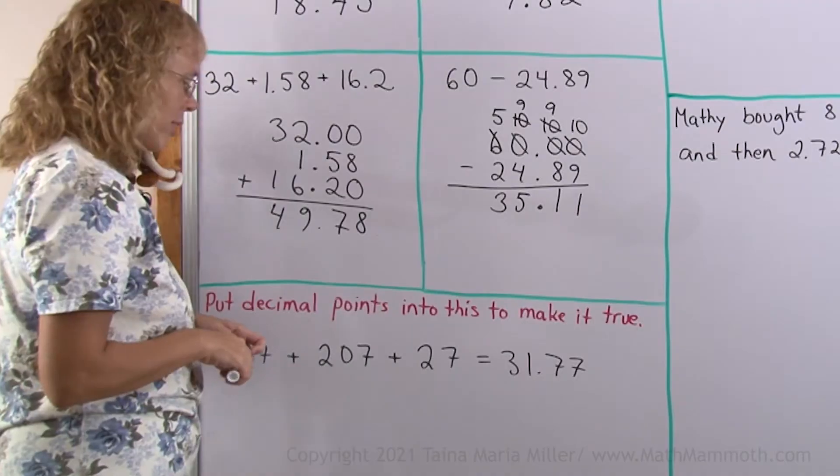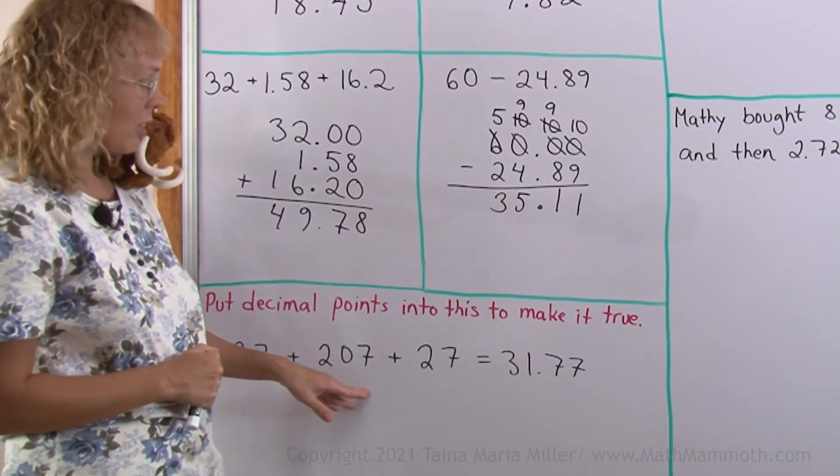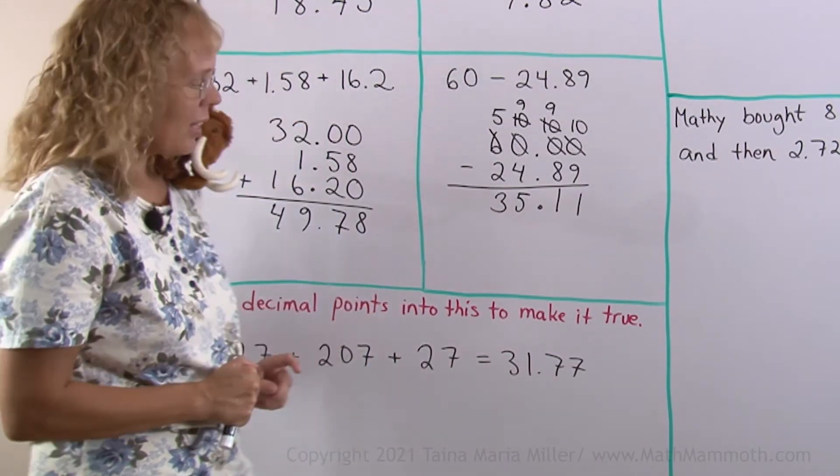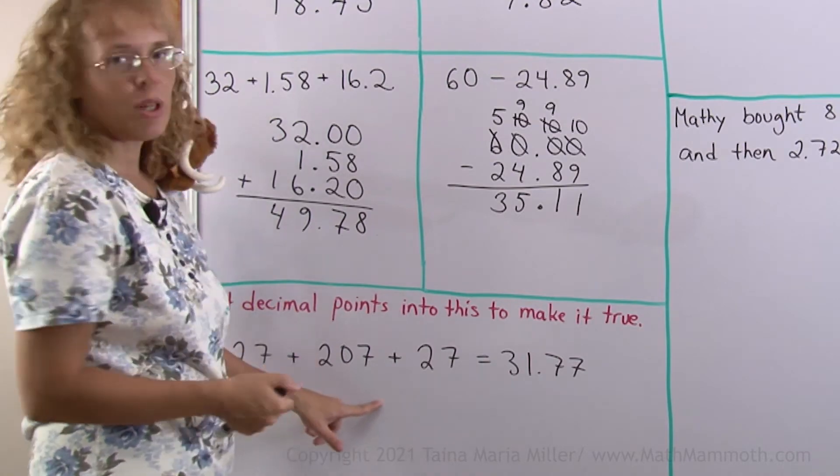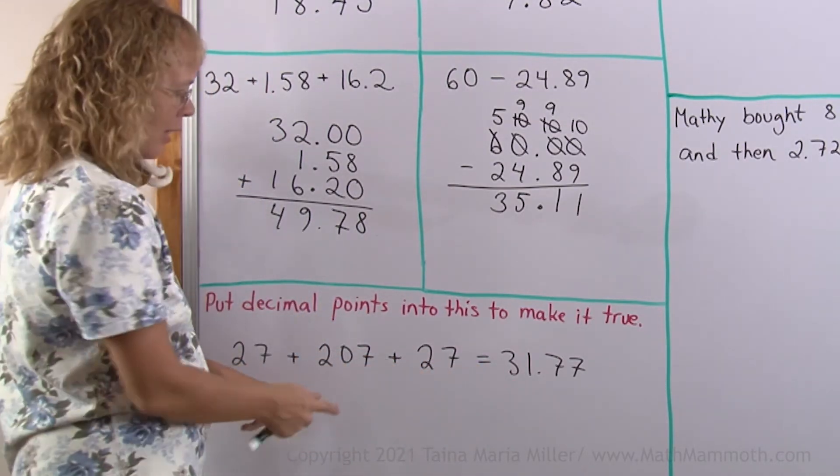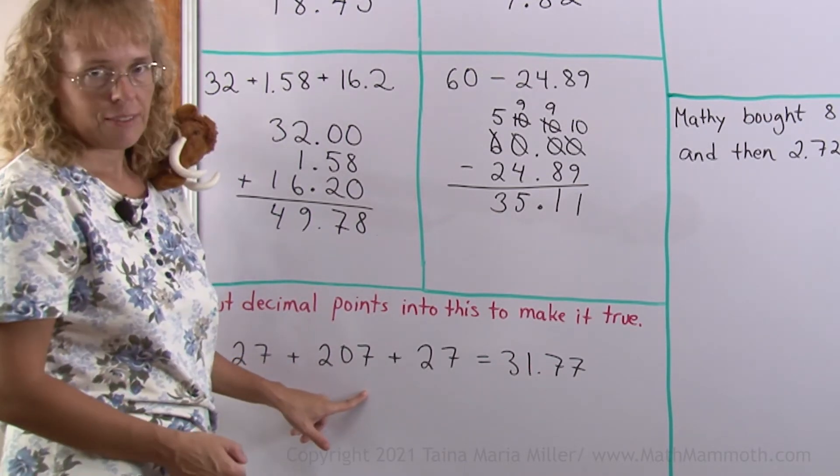Put the decimal points into this to make it true. It says twenty-seven plus two hundred seven plus twenty-seven is thirty-one point seven seven. So obviously this one here cannot be two hundred seven. Because our sum here is only thirty-one something. This has to be either two point something or twenty point seven.